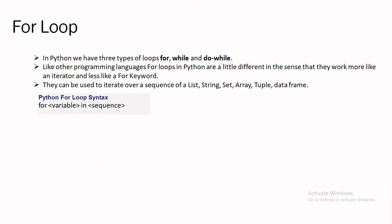In Python we have three types of loop: for, while, and do-while. Like other programming languages, for loops in Python are a little bit different in the sense that they work more like an iterator and less like a traditional for keyword. They can be used to iterate over a sequence of lists, strings, sets, arrays, tuples, and data frames.